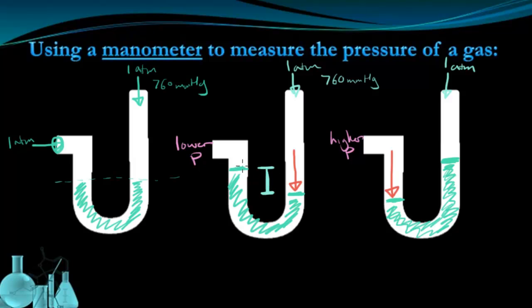So this distance right here, between the height on one end of the tube and the other end of the tube, is going to be some number of millimeters. Let's say in this case, it's 30 millimeters of mercury is the difference in the levels of mercury in this container.